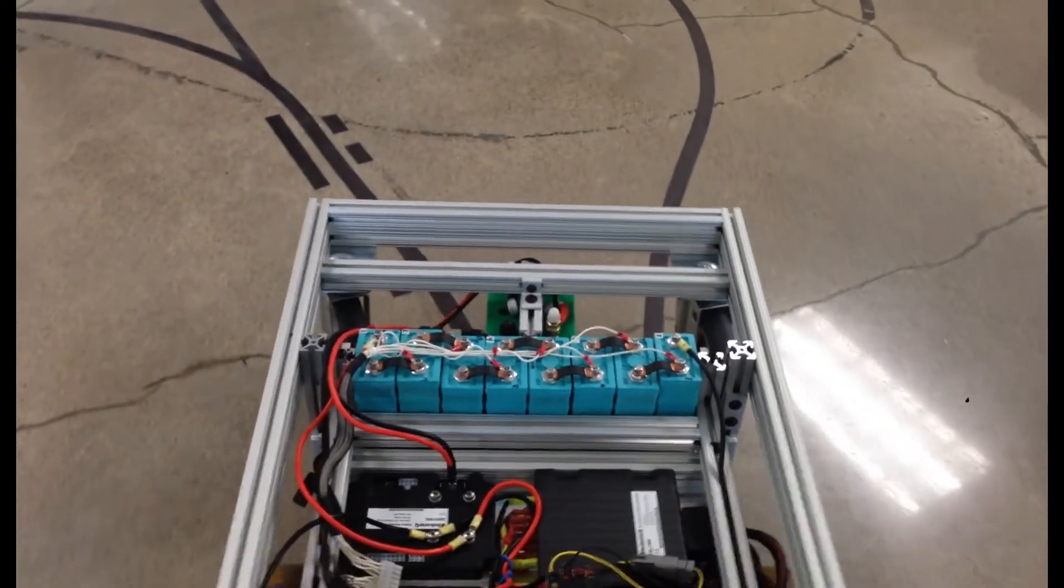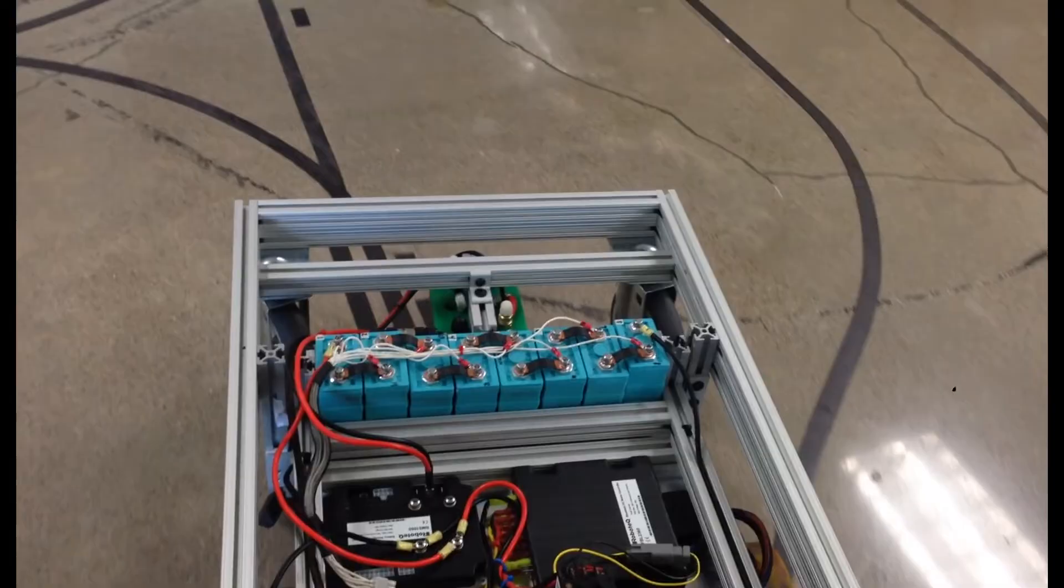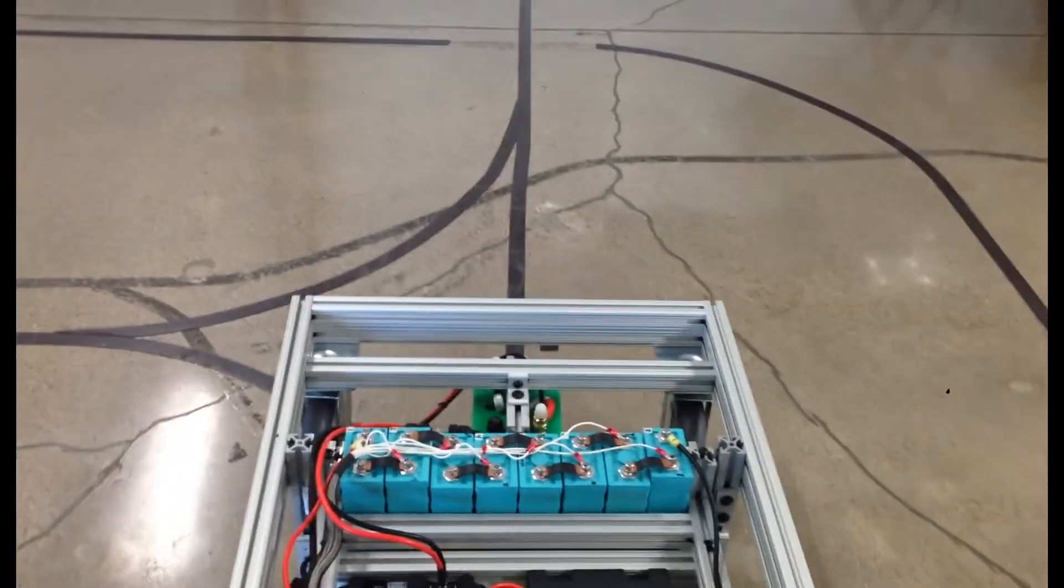As we approach the charging station, the BMS reports a low charge state to the controller, causing the AGV to take the right track.